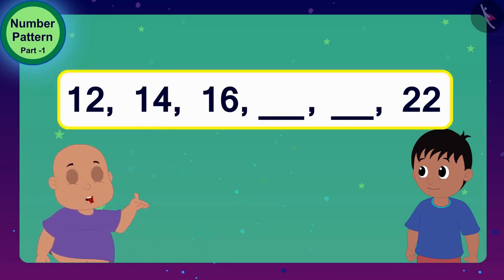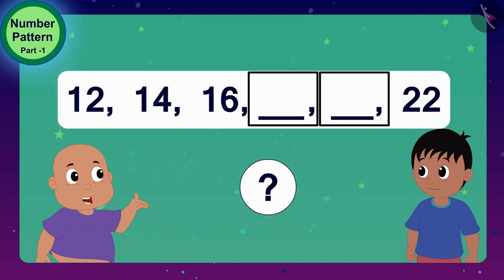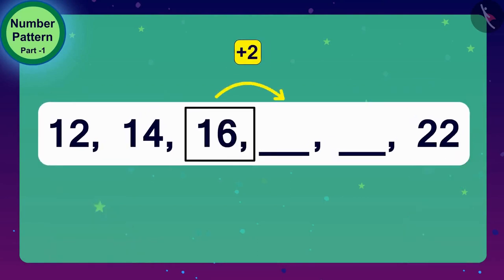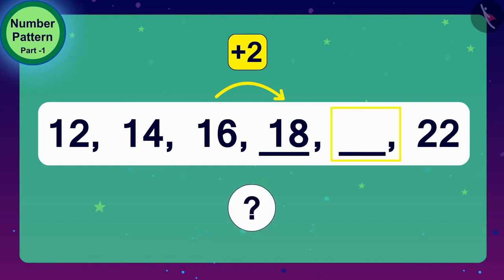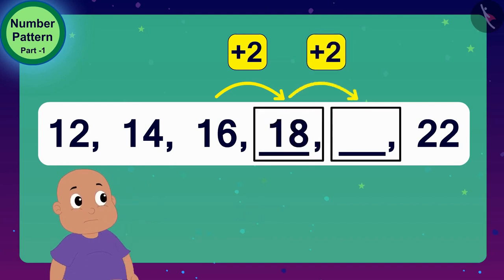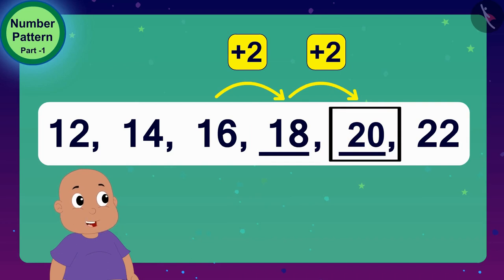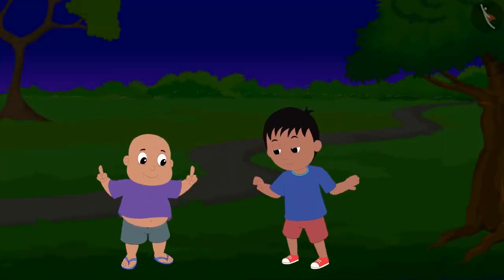So, what do we have to do to get the next number in this number pattern? We have to add 2 to 16. Done — 2 added to 16 is 18. Now can you tell what will be the next number? Add 2 to 18 and you get 20. Raju, we have solved the first riddle! Both Raju and Bablu started dancing.